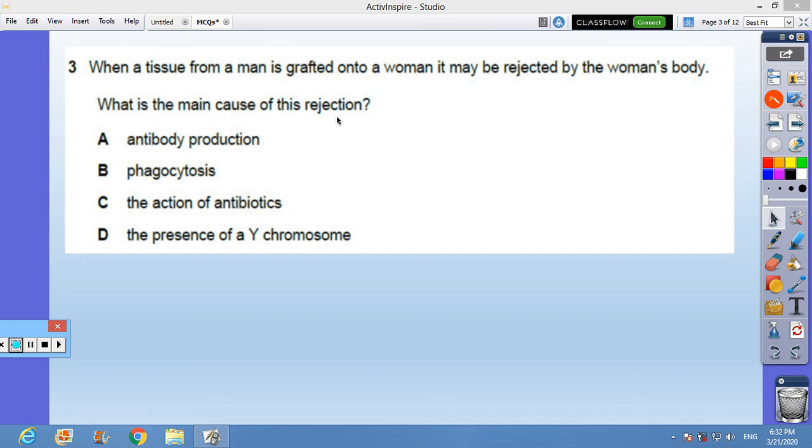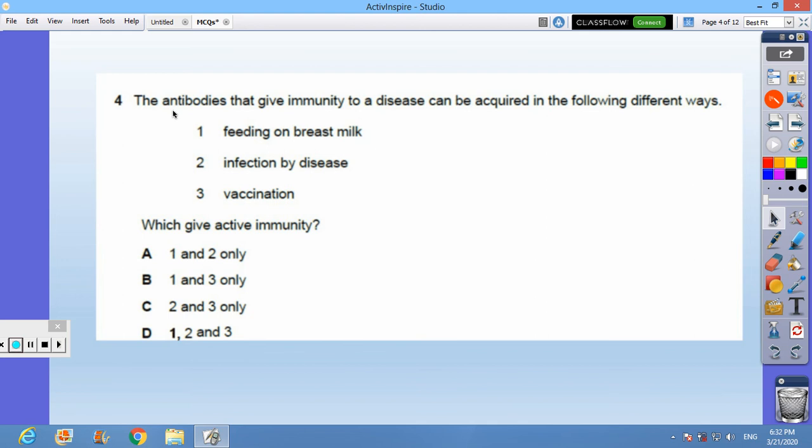cause of this rejection? The answer is A, antibody production by the recipient. Question 4: the antibodies that give immunity to a disease can be acquired in the following different ways like feeding on the breast milk, infection by the disease, or vaccination which give active immunity. The answer is C, 2 and 3 only - being infected with a disease or vaccinated.